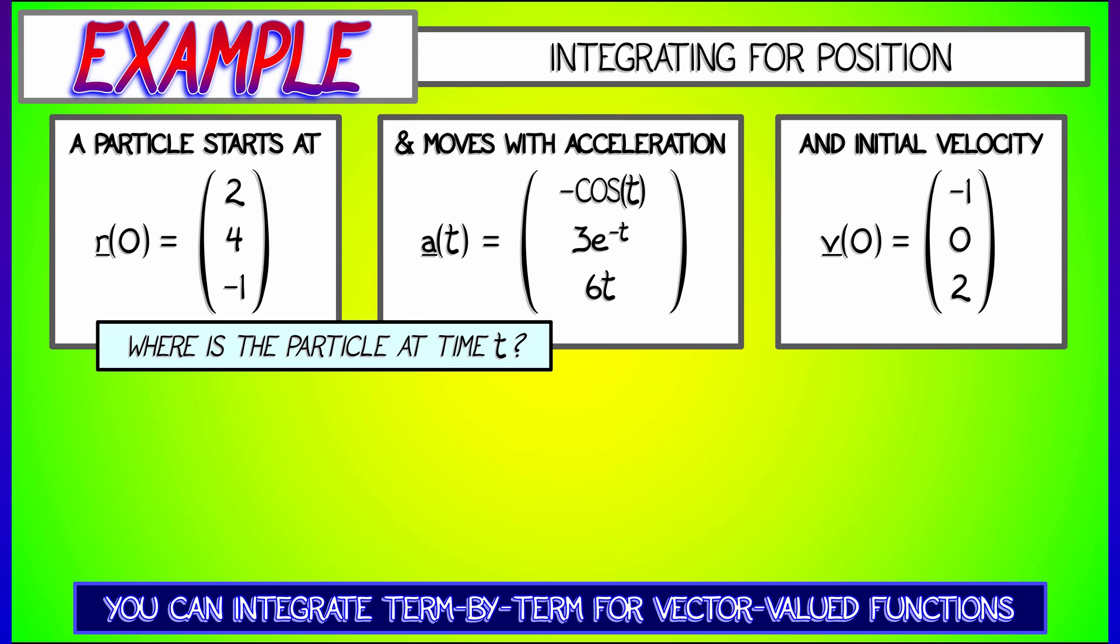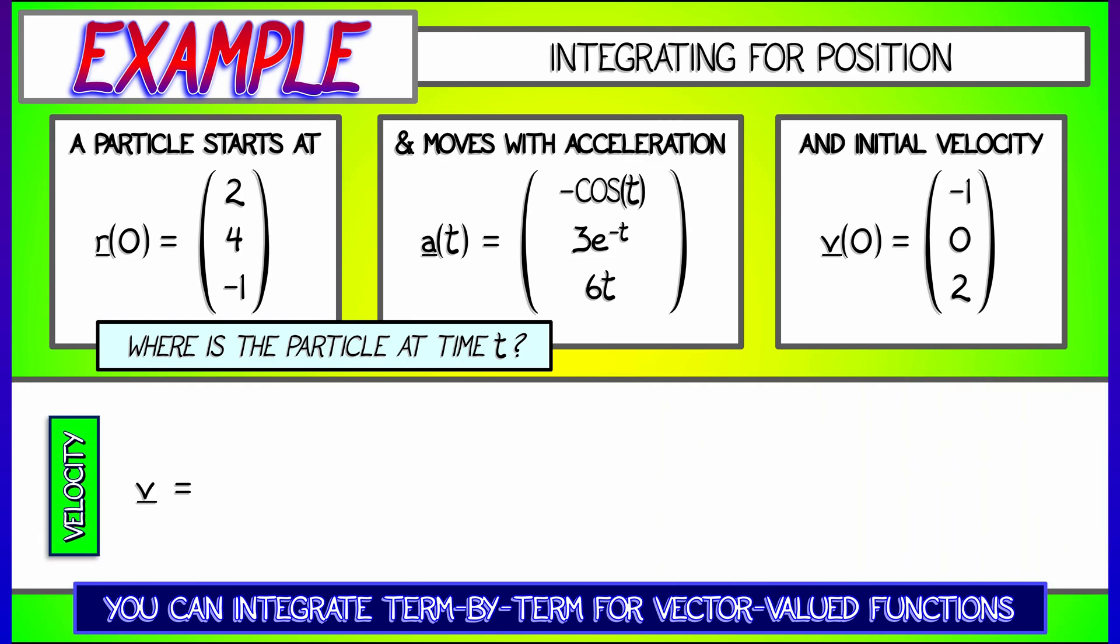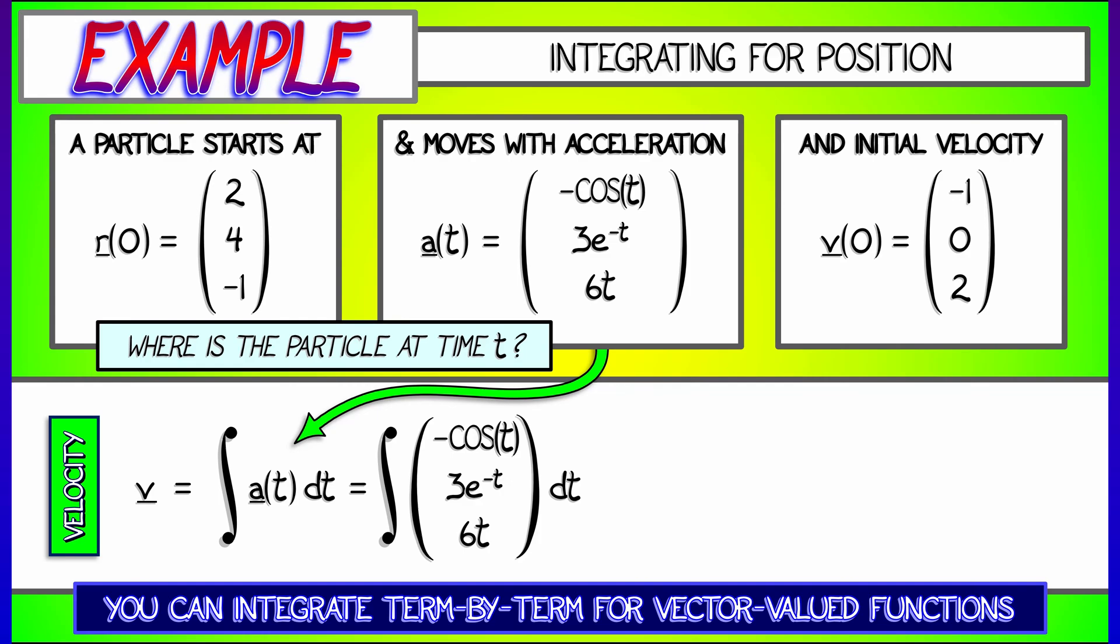So, to get the velocity vector v, you integrate the acceleration vector a of t with respect to time. Plugging in what we know that acceleration vector to be, we get the integral of minus cosine t, 3e to the minus t, 6t dt.